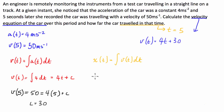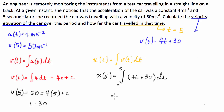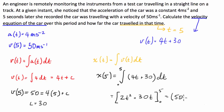To find the distance covered in the first 5 seconds, we're going to do the definite integral from 0 to 5 of v(t), which we worked out was 4t + 30, dt. Integrating gives 2t² + 30t, evaluated between 0 and 5. That's 2(25) + 30(5) minus 0, which is 50 + 150, so the car travelled 200 metres.